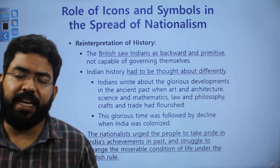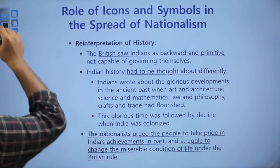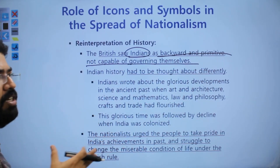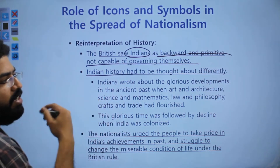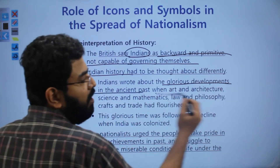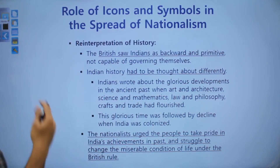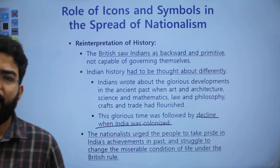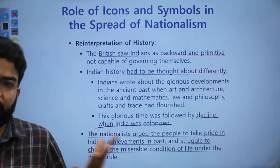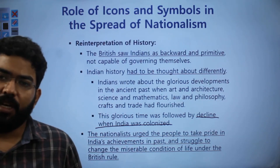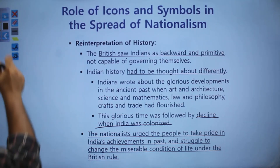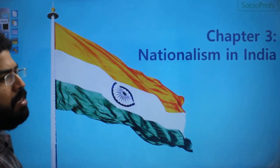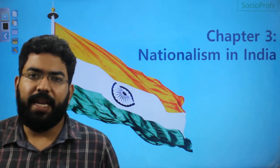The nationalists also started reinterpreting history, because the British had said that Indians were a backward and primitive culture not capable of governing themselves. The nationalists told the true story of India's glorious past — showing the developments in ancient India when art and architecture, science and mathematics, law and philosophy were all flourishing. They argued that India only started declining when it was colonized, first by various Muslim empires and then by the British. This led to a lot of collective belonging, as people were urged to take pride in India's achievements. This brings us to the end of the chapter on Nationalism in India.